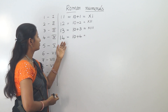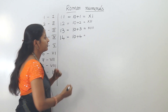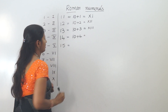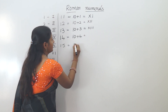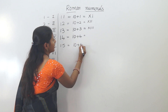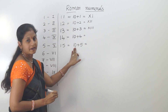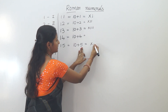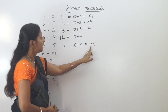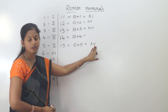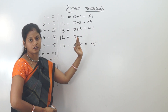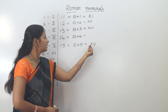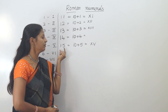For 15, we write 15 as 10 plus 5. Ten is X and 5 is V, so we add V to the right side of X. Therefore, XV equals 15.